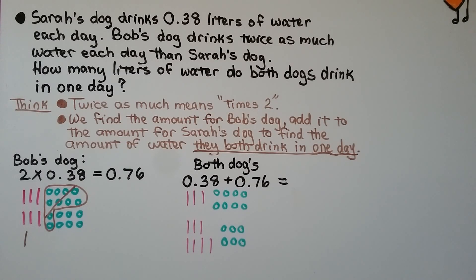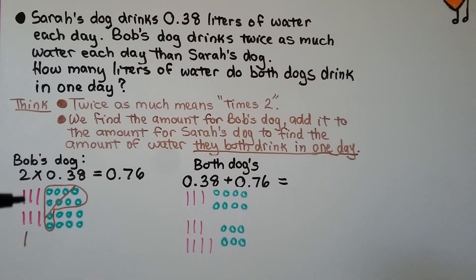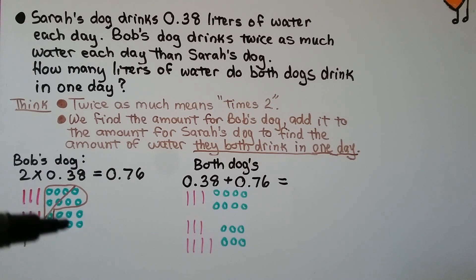Sarah's dog drinks thirty-eight hundredths liters of water each day. Bob's dog drinks twice as much water each day as Sarah's dog. How many liters of water do both dogs drink in one day? We draw thirty-eight hundredths as three lines for the tenths and eight circles for the hundredths, two times. We regroup ten of the hundredths as a tenth, cross them out, and draw the new tenth. We count seven tenths and six hundredths — so two times thirty-eight hundredths equals seventy-six hundredths.